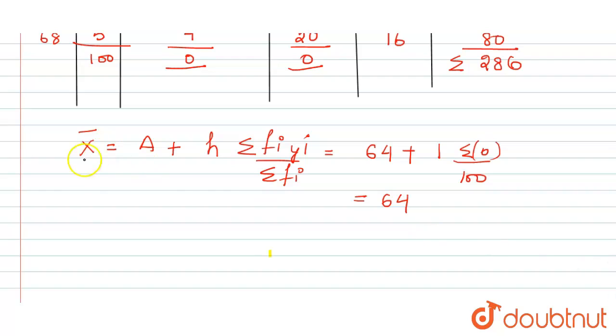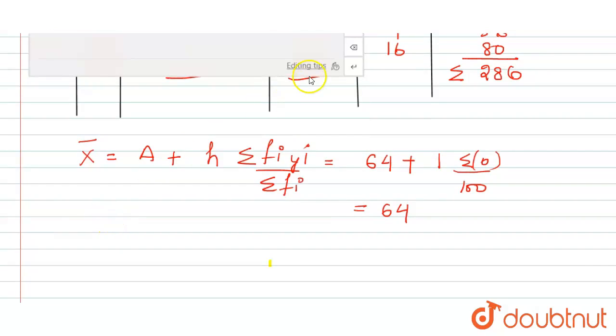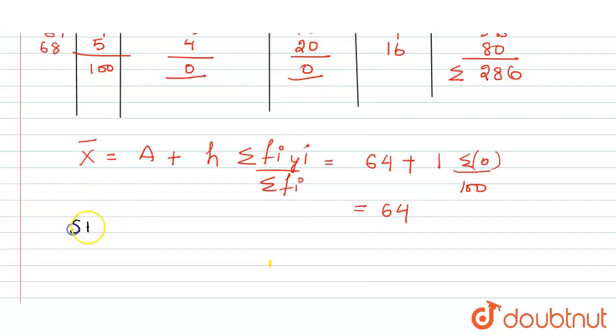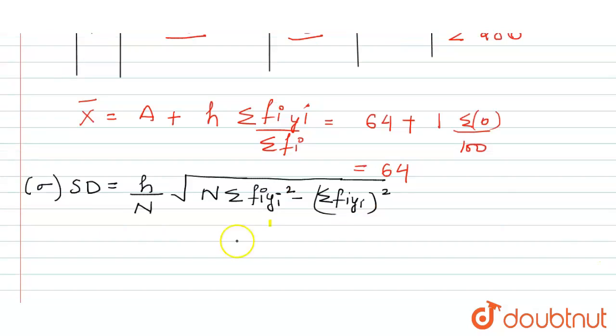The formula to calculate the standard deviation is h upon n, n is the sum of frequency, square root of, square root of n into summation of fi yi square, fi yi square, minus summation of fi yi, fi yi whole square. So let us put the values inside.